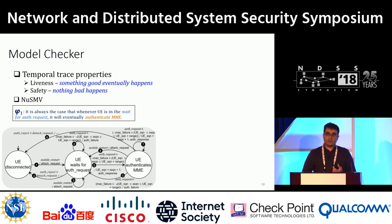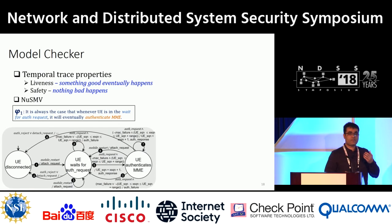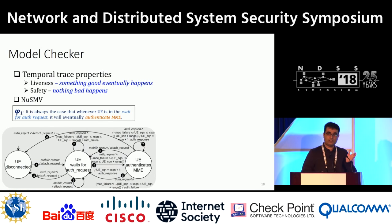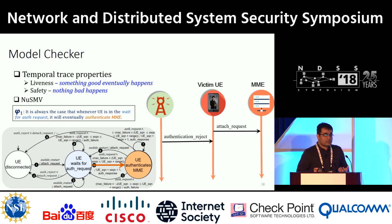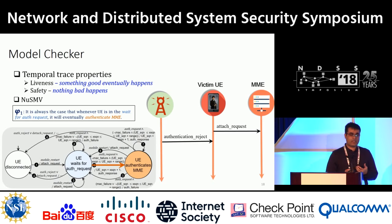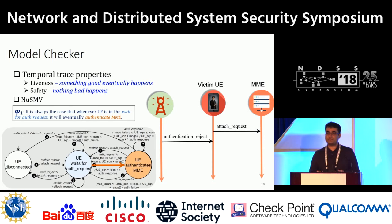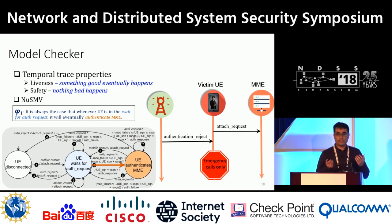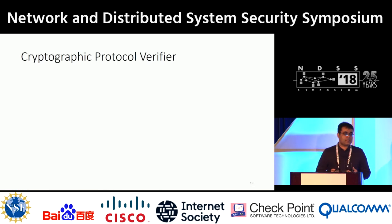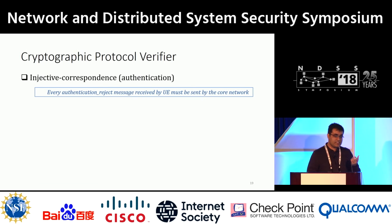Here is a sample property we want to check: if the UE is in the state of waiting for authentication, then the UE will eventually authenticate the MME. With the model checker, we found a counterexample: whenever the mobile device sends the initial attach request message to the MME, the attacker — using a malicious eNodeB — can send an authentication reject message, which causes the victim UE to move to the emergency-calls-only state. It never allows the victim device to reach the authentication stage.